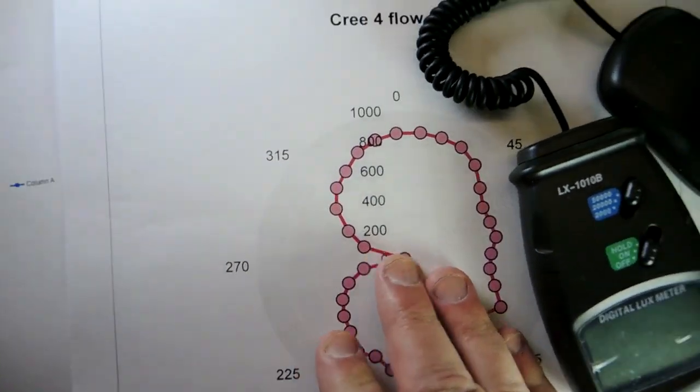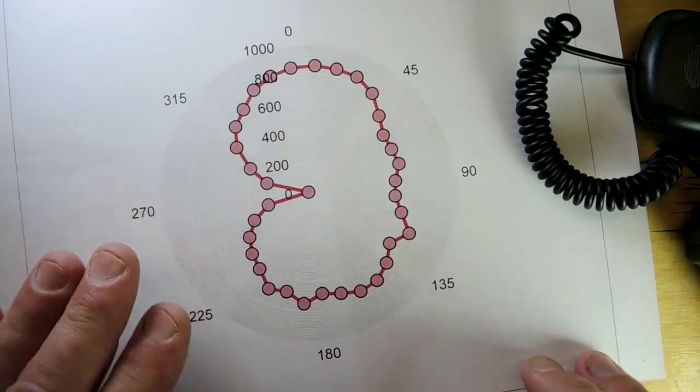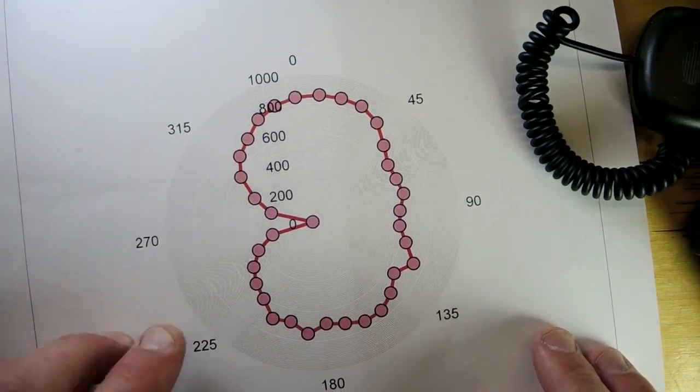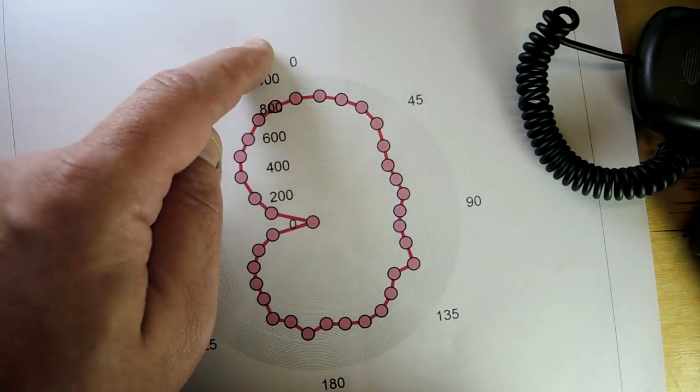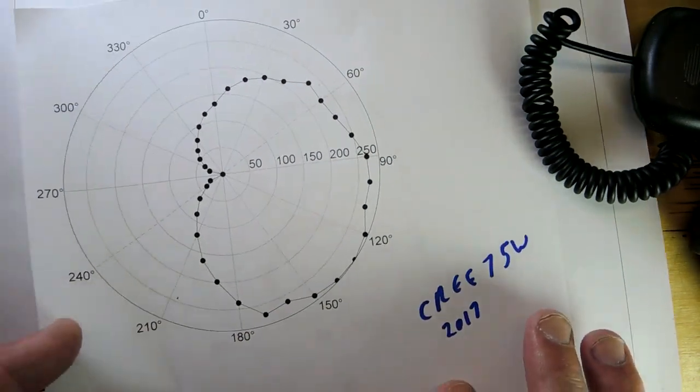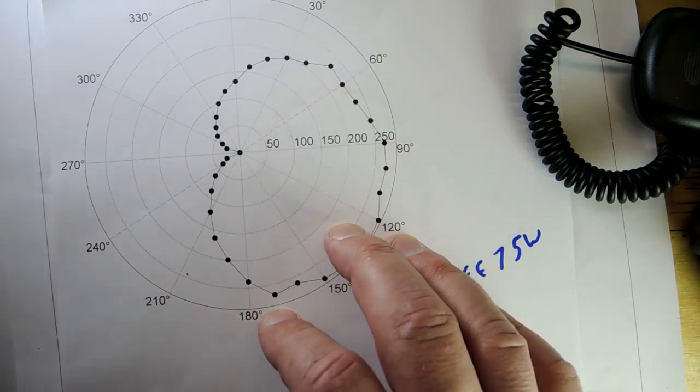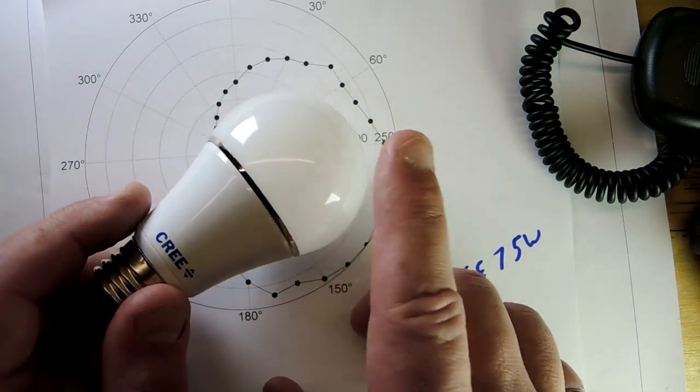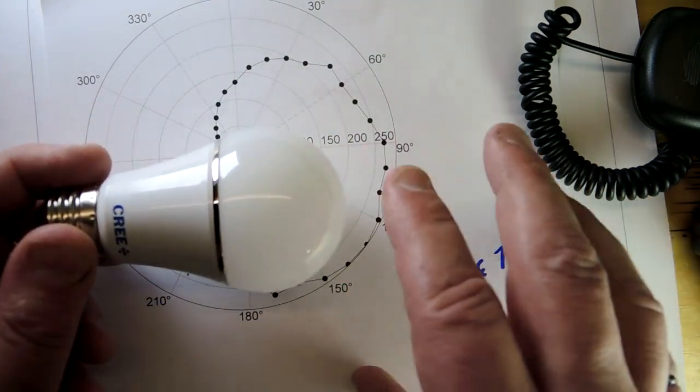Now, this is actually quite a bit different than the Cree Foreflow, for example, and the bulb before it. Both those bulbs actually made a significant attempt to create a bulb that really emulated the old A-shaped bulb. This is the Cree Foreflow. I took it about three years ago. You can see here, there was actually significant side loads coming down here. So the bulb was trying to fire out on the side, which is what incandescents used to do when the filament was vertically placed.